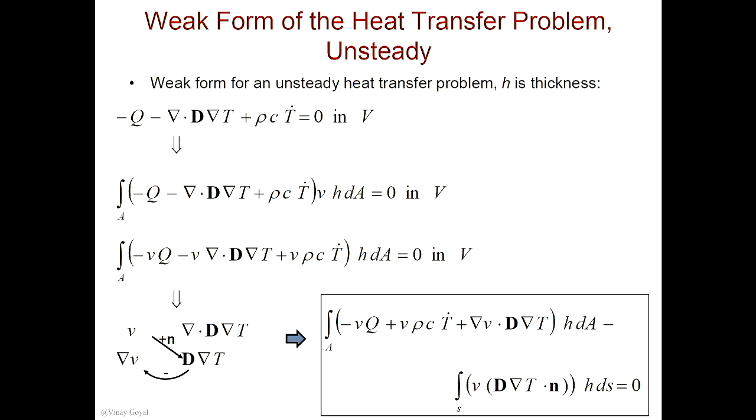So now I'm ready to write V on the left-hand side and this expression on the right-hand side. To integrate by parts in a 2D domain, you'll remove the gradient, put it on the other side, and then you're left with D bold gradient temperature. And now you have this N here — the normal vector.